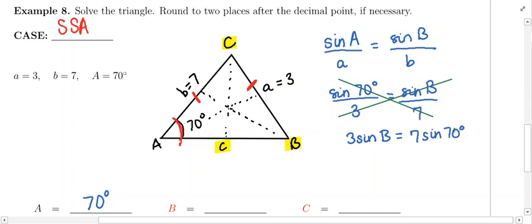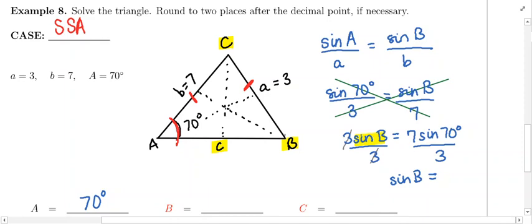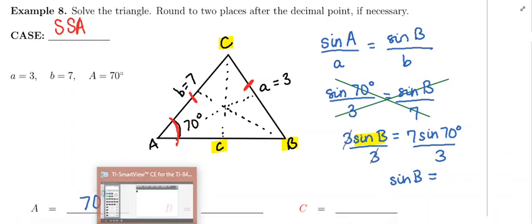We are after angle B. It's trapped by the sine, so we need to isolate the quantity, the sine of B. We're going to divide both sides by 3. So the sine of B is going to be equal to this quantity on the right. On the left, the 3s will cancel.